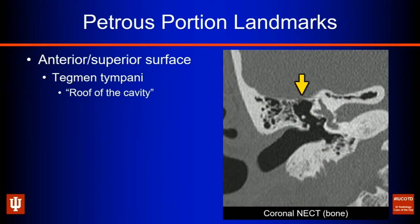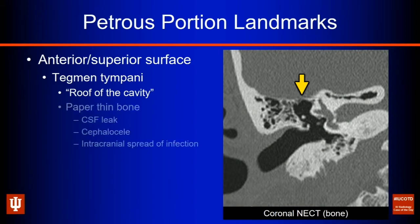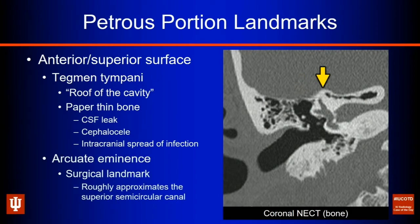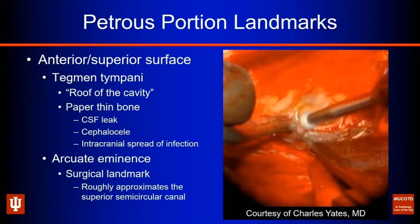Looking at cross-sectional anatomy of the petrous portion, along the anterior and superior portions we see the tegmen tympani — the roof to this cavity, denoted by the yellow arrow. This is paper-thin bone, prone to CSF leaks, cephaloceles, or intracranial spread of infection. More medially, we see the arcuate eminence — an important surgical landmark that roughly approximates the superior semicircular canal, which ENT colleagues look for during middle cranial fossa surgical approaches to the temporal bone.